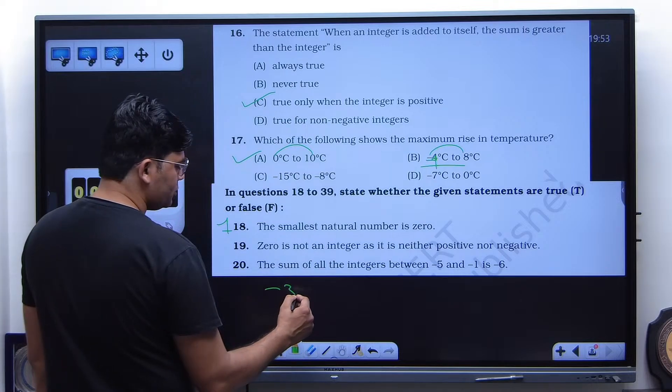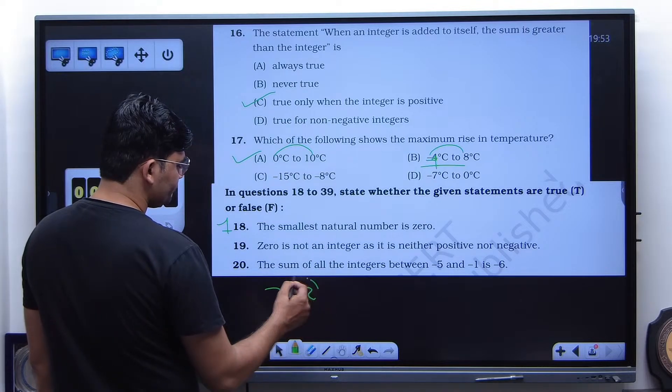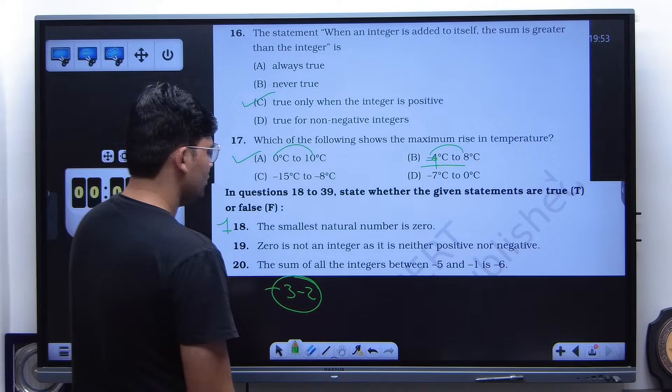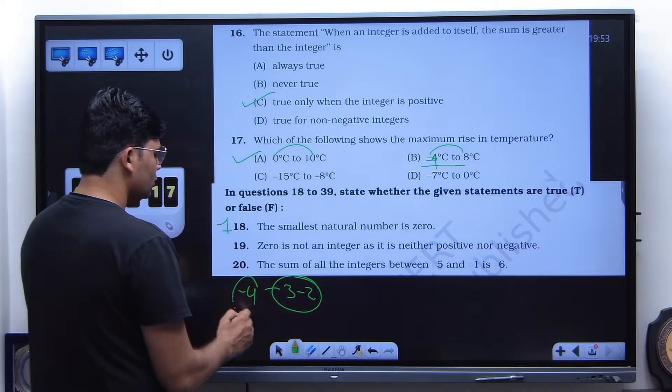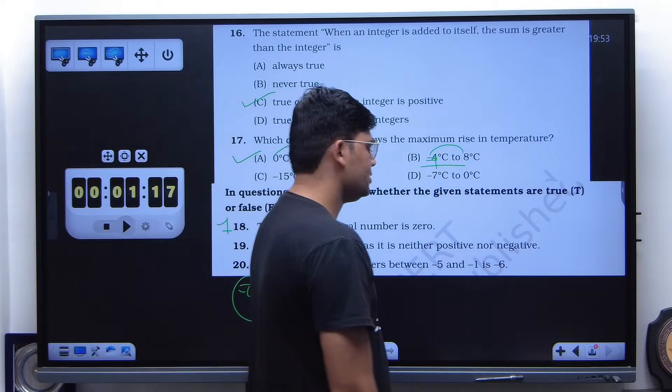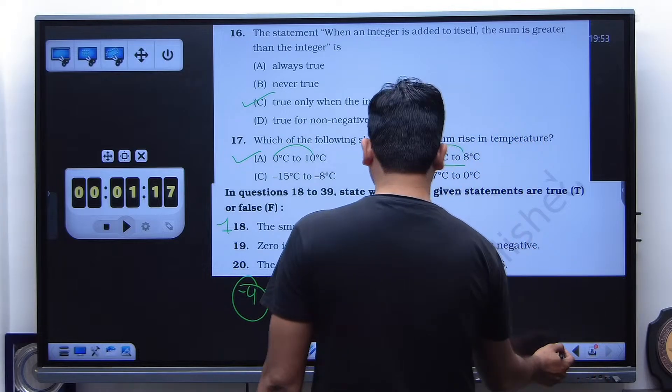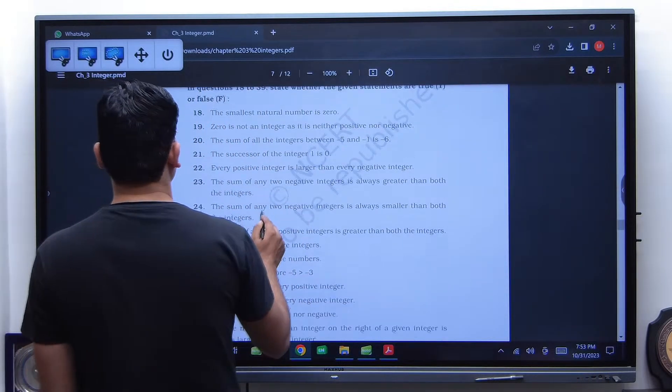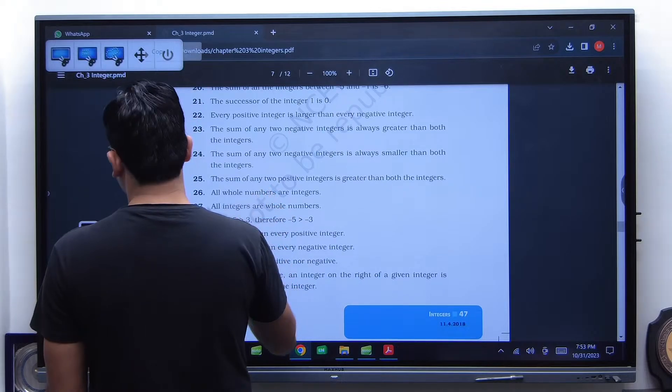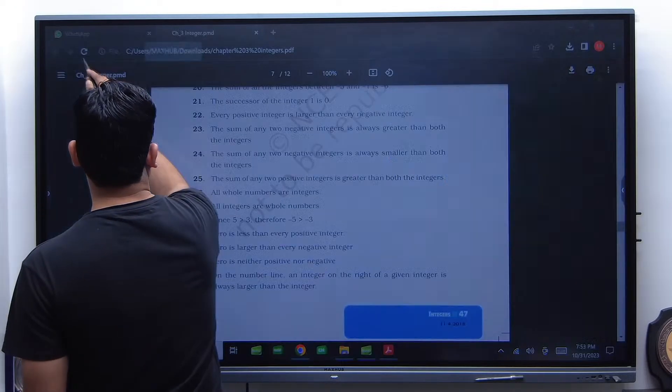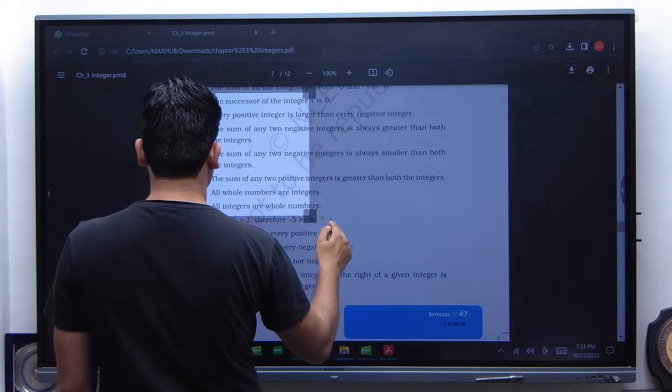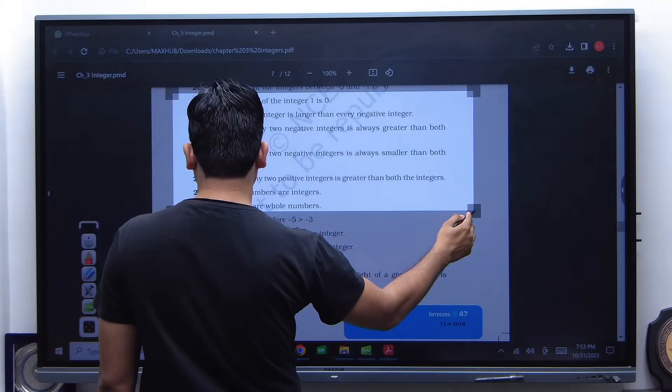The sum of all the integers between minus 5 and minus 1 is minus 6. So it is false. And minus 4. Great. So it is minus 9.